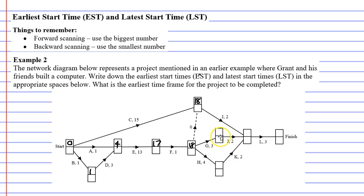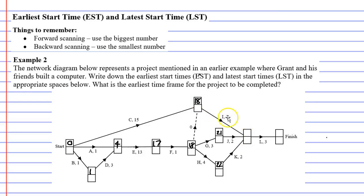Activity G takes three minutes and cannot start until 18 minutes into the project — 18 plus 3 is 21. Activity H cannot start until 18 minutes into the project — 18 plus 4 is 22. Then we get to the next vertex where quite a lot of paths meet. 18 plus 2 gives us 20 as one option. 21 plus 2 gives us 23 as another option. And 22 plus 2 gives us 24 as the third option.